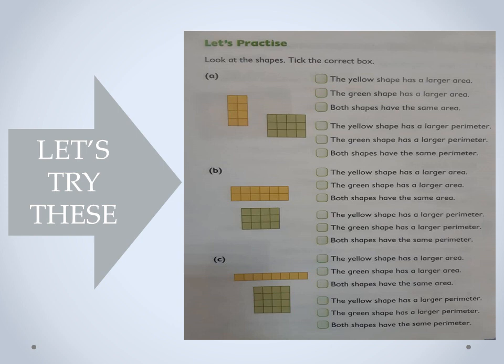Here we're going to have a practice. We'll look at the shapes and then take the correct box. This is supposed to be what you do alone, but I'll just do one with you. Okay, the first one — look at the yellow rectangle and the green one.